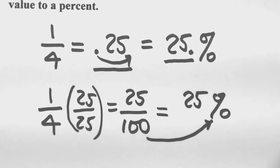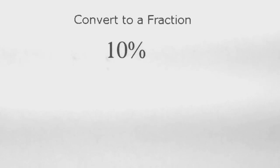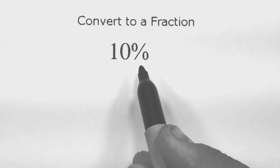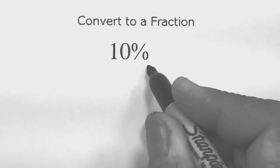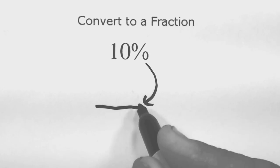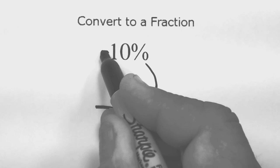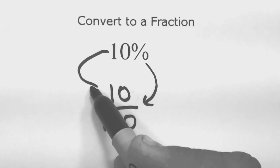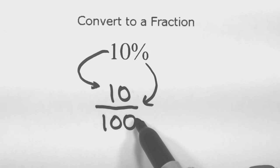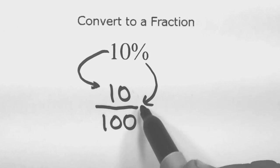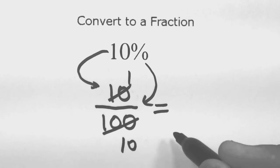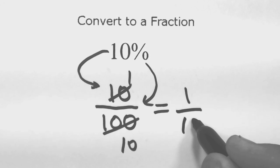Let's look at some examples of converting percents and fractions back and forth. First: convert 10% to a fraction. Take the percent sign and trade it in for over one hundred, writing ten on top — that gives ten over one hundred. Now reduce: ten goes once into ten and ten times into a hundred, so our final fraction is one-tenth.